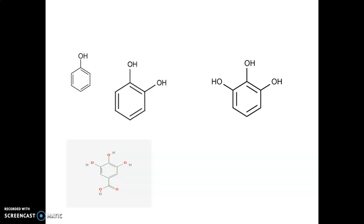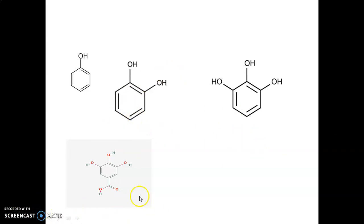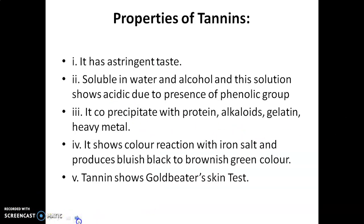Tannins are the polymers of these types of compounds. If we polymerize these units, we can easily obtain polyphenolic compounds with a molecular weight of 1000 or more. These lower molecular weight units are known as pseudo tannins. Now let us see the properties of tannins.